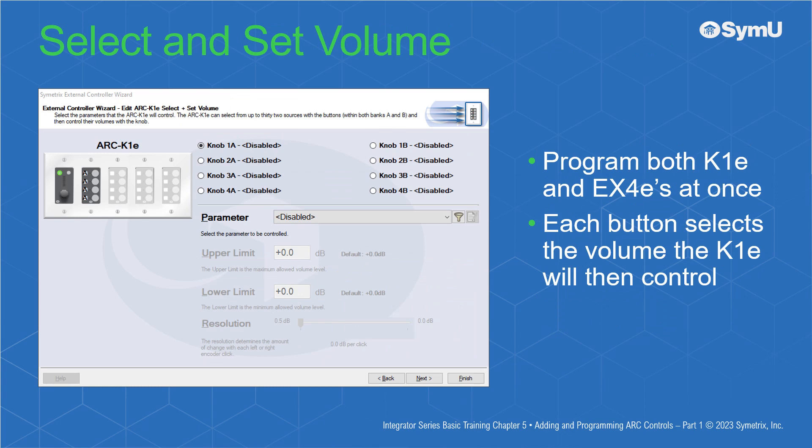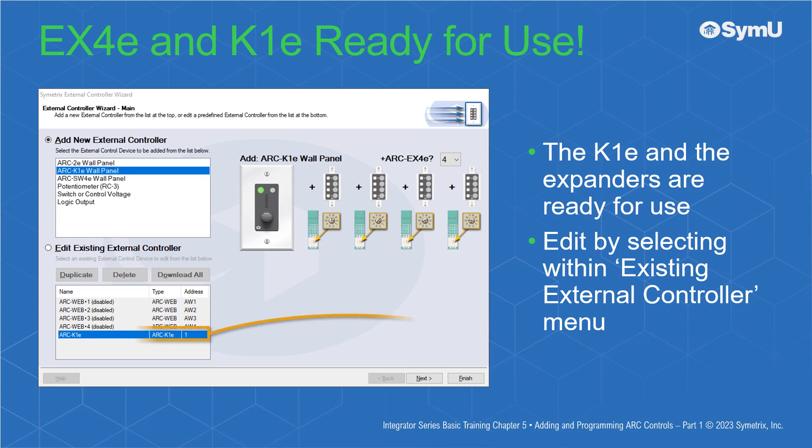Select and Set Volume mode is notably different from the other modes, as it requires you to program both the K1E and EX4Es at once, depending on how many you have attached to the main unit. Each button selects the volume the K1E will then control, up to 32. The K1E plus expanders are now programmed for use and may be re-edited by selecting them from the existing External Controller menu.